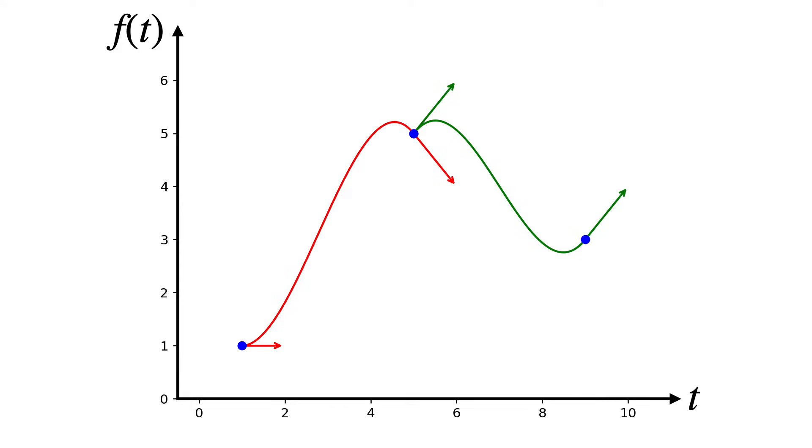Let's call the three constraint times s for start, e for end, and k for knot. How many constraints do we have? Let's review. We need to pass through the control points. That's two for the red curve and another two for the green curve. That's four equations so far.